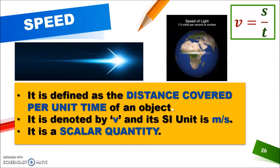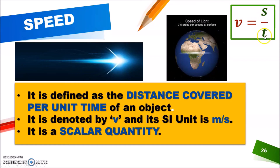Speed is defined as distance covered per unit time. Because speed is a scalar quantity, we use distance in the formula. Speed is equal to distance divided by time, it is denoted by V, and its SI unit is meters per second.